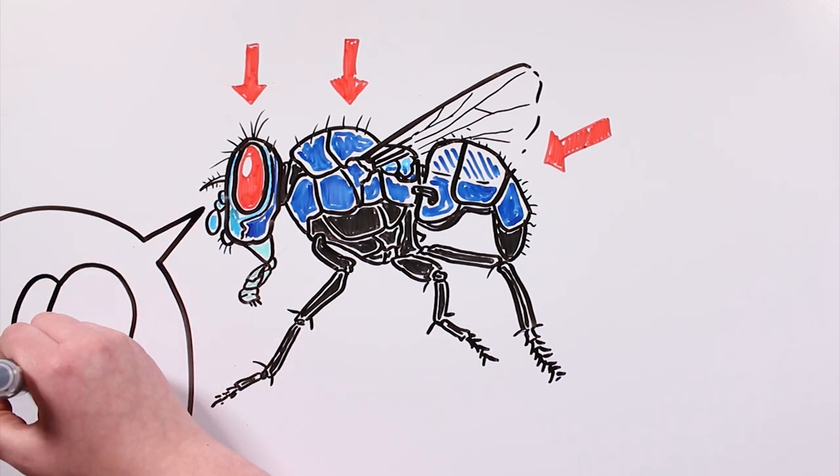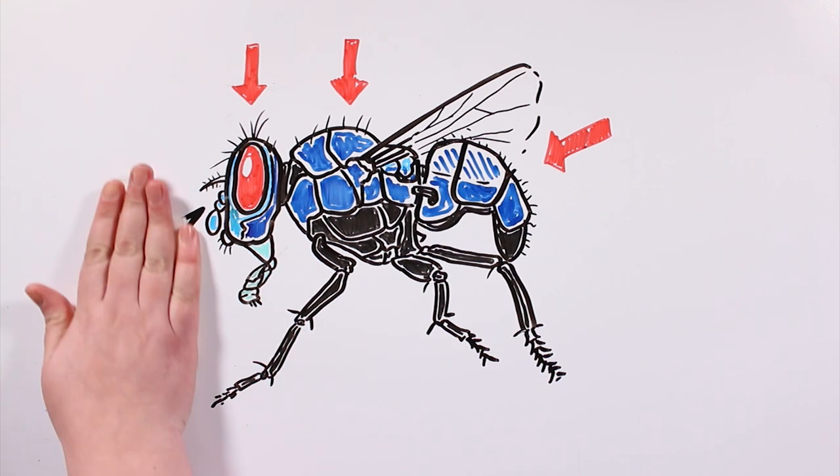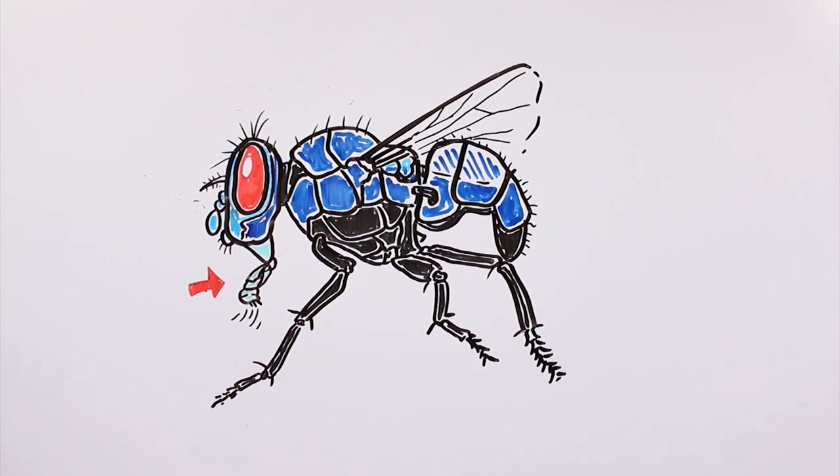Their eyes are made of thousands of light sensitive lenses, and they are constantly cleaning them with their legs. Their mouth parts are adapted to bite and lick.